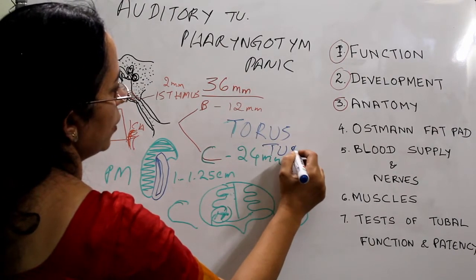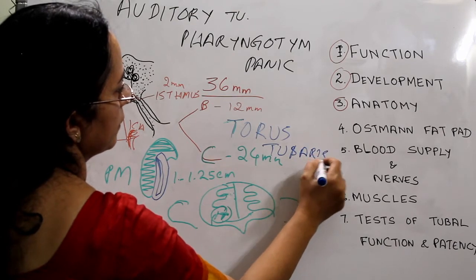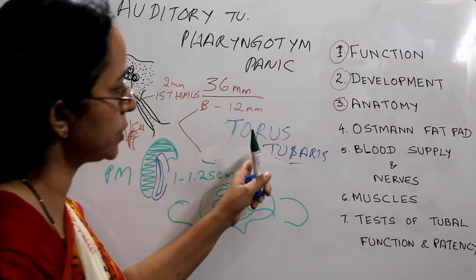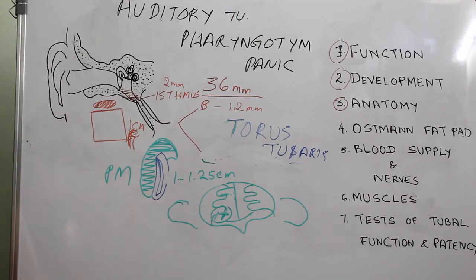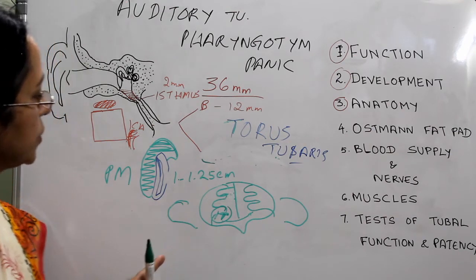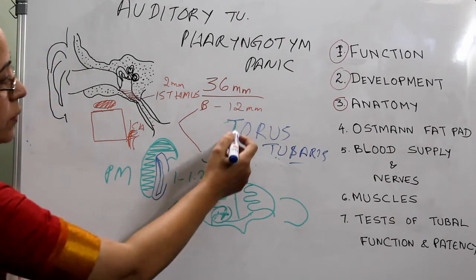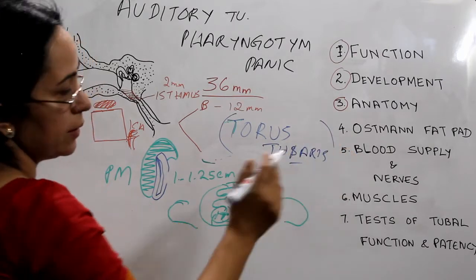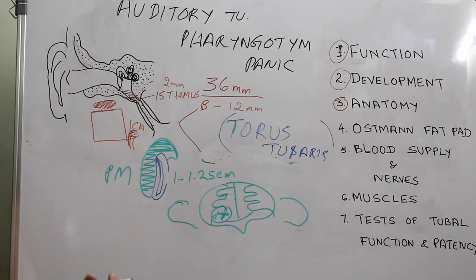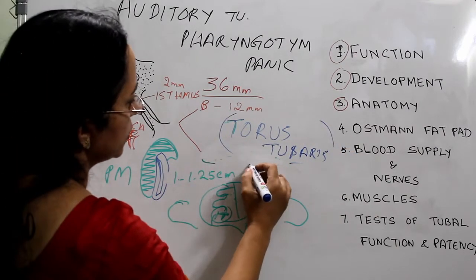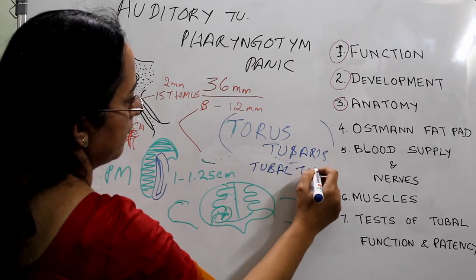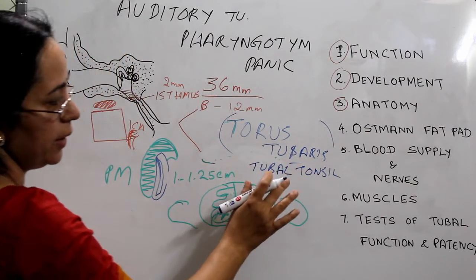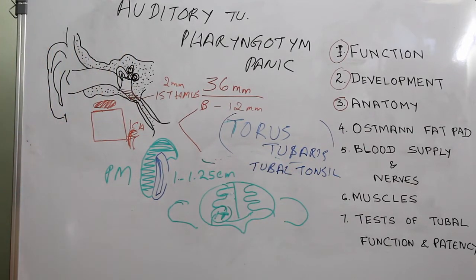The torus tubaris is the elevation formed by the cartilaginous part of the Eustachian tube. Around the torus tubaris, there are lymphoid tissues seen mainly in the pediatric group, and this is called the tubal tonsil. This lymphoid enlargement is more prominent in children.